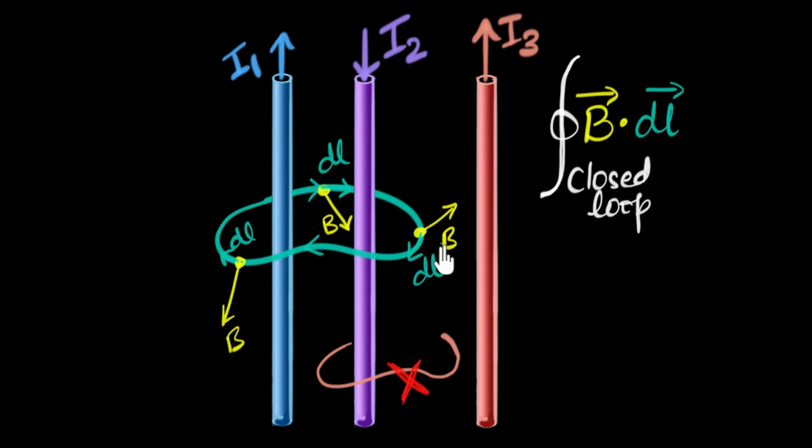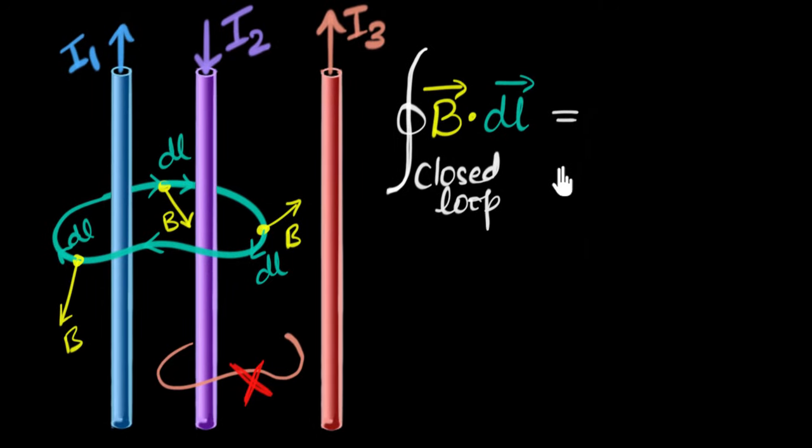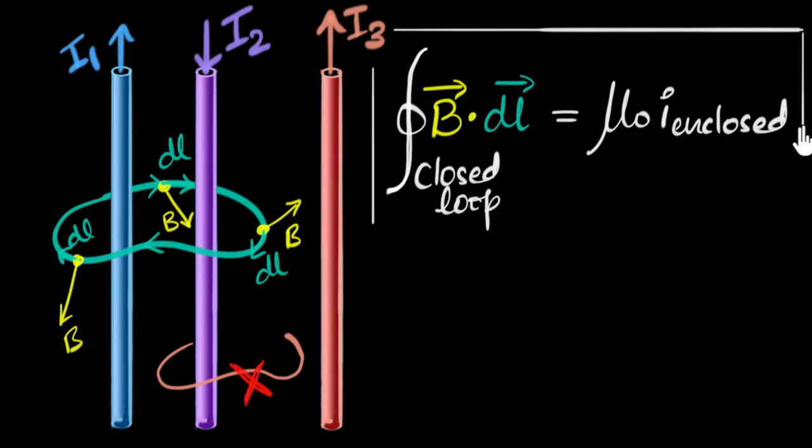All right, what happens if I do that? Ampere asks me, what do you think will happen if you took this integral over the closed loop? And I say, I have no idea. You tell us, Ampere. This is where Ampere smiles and laughs and says, the answer is going to be, and this is Ampere's circuital law, the answer is going to be always μ₀ times I enclosed. And this, my dear friends, is what we call Ampere's circuital law.